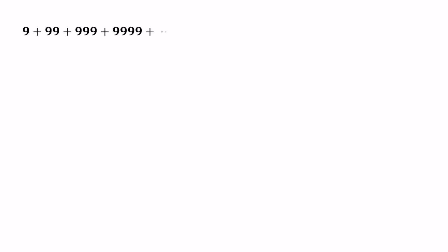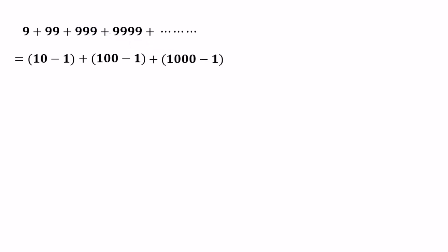Let's imagine you need to find an equation for 9 plus 99 plus 999 plus 9999 and so on. The value of 9 can be written as 10 minus 1. The value of 99 can be written as 100 minus 1. The value of 999 can be written as 1000 minus 1. Similarly, the value of 9999 can be written as 10,000 minus 1 and so on.